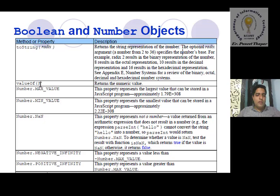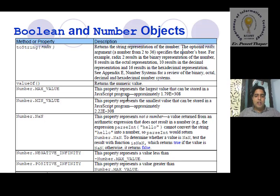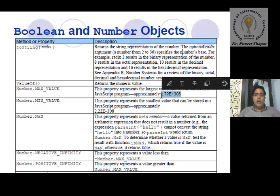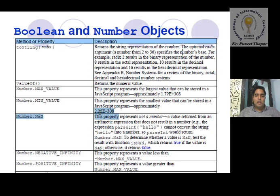Next is valueOf: it simply returns a numeric value. Whatever number value we provide, it generates and returns that numeric value. And Number.MAX_VALUE is a property that represents the largest value that can be stored in a JavaScript program — it returns approximately 1.79E+308. For minimum value, Number.MIN_VALUE returns approximately 2.2E-308, which is the smallest value.